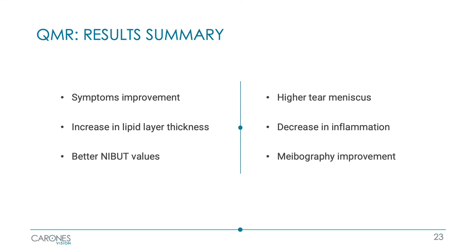We found an increase in tear meniscus height, an improvement in NIBUT values, and a decrease in inflammation. Over time, we also found an improvement in the morphology of the meibomian glands associated with their better functionality.